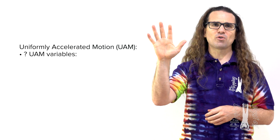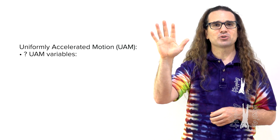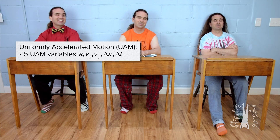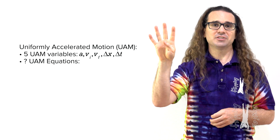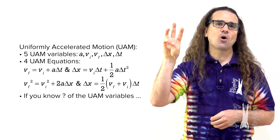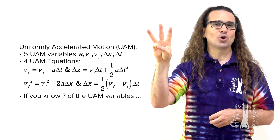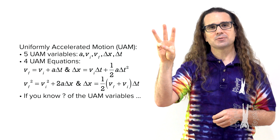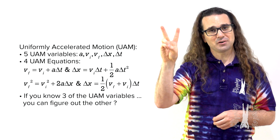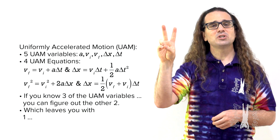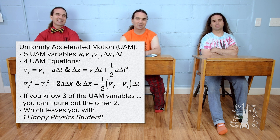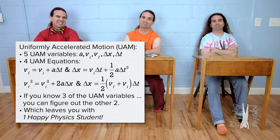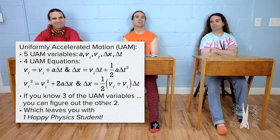Good morning, class. How many uniformly accelerated motion variables are there? Five. And how many UAM equations are there? Four. And if you know how many of the UAM variables? Three. You can figure out the other two. Which leaves you with one happy physics student. I always like that. I do too.